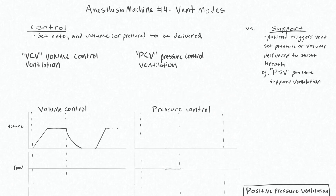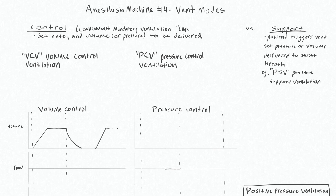One of your first decisions when you choose event mode is whether you choose a control mode or a support mode of ventilation. For the control mode, what you're doing is setting a rate and volume or pressure that is to be delivered to the patient. Classically this is called a continuous mandatory ventilation, or CMV.